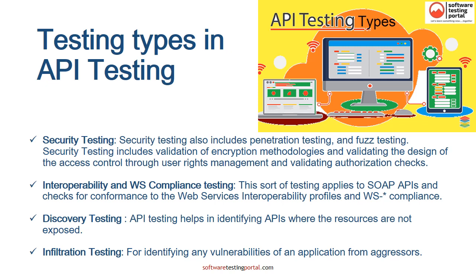Security testing also includes penetration testing and fuzz testing. Interoperability and WS compliance testing applies to SOAP APIs. Interoperability between SOAP APIs is checked by ensuring conformance to web service interoperability profiles. WS compliance is tested to ensure standards such as WS Addressing, WS Discovery, WS Federation, WS Policy, WS Security, and WS Trust are properly implemented. Discovery testing helps identify APIs where resources are not exposed. Penetration testing is for identifying vulnerabilities of an application from attackers.